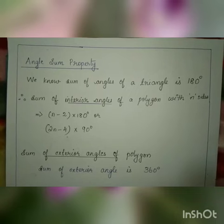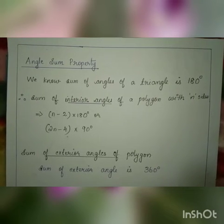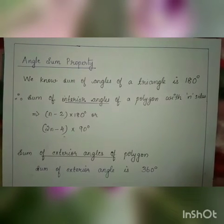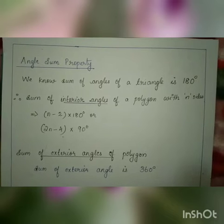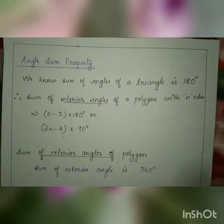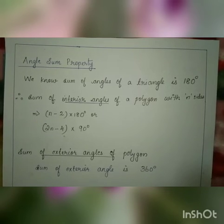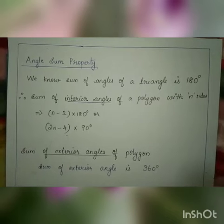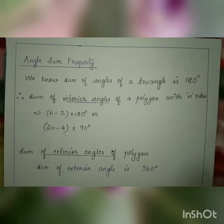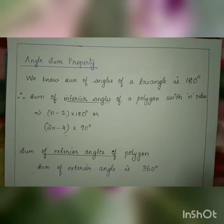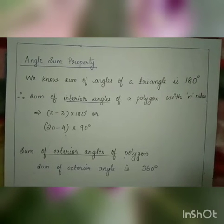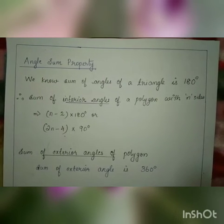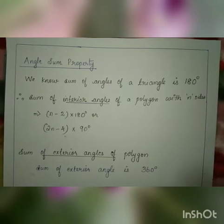First we can check the sum of interior angles of a polygon. What is the sum of interior angles of a polygon? If it is having n sides, there is one equation: n minus 2 into 180 degrees, or equivalently 2n minus 4 into 90 degrees.